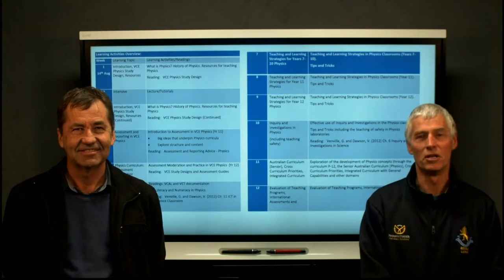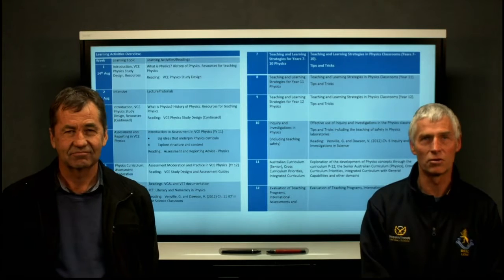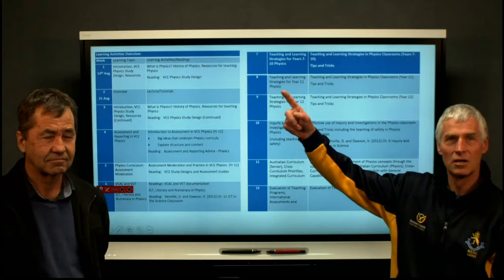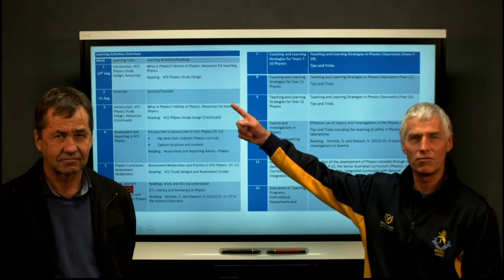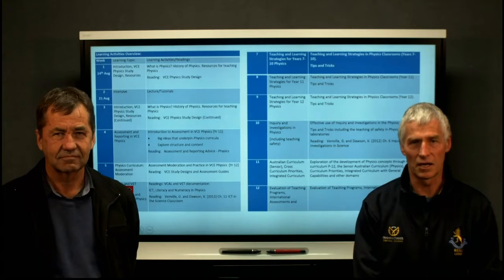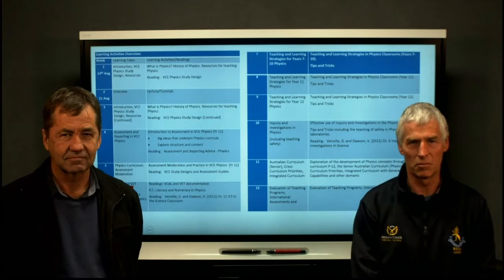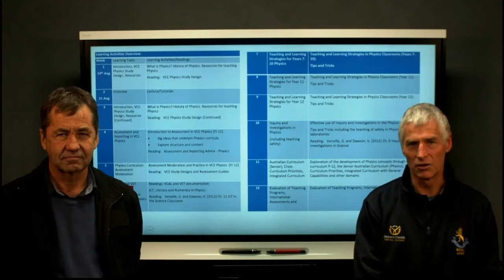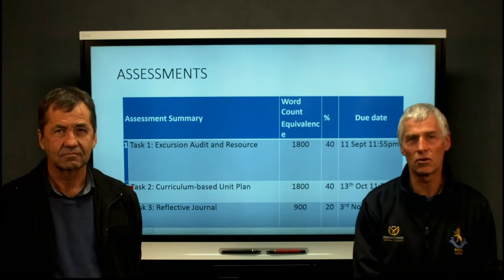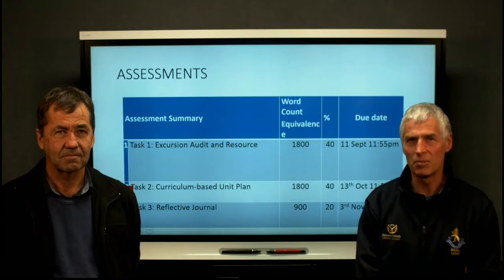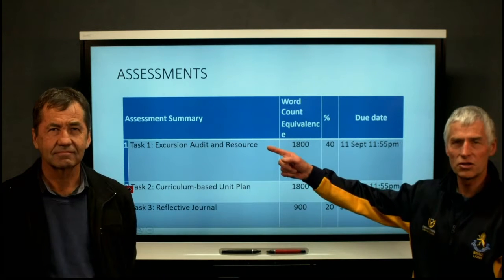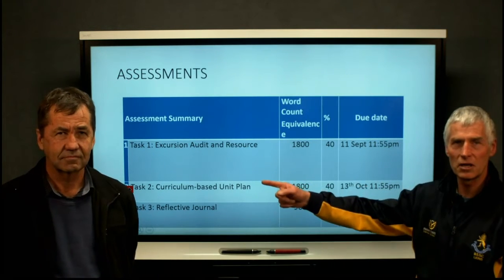You should be familiar with the course structure by now through the course booklet — it's just behind us here. We've got the 12 weeks. Week 2, of course, is the intensive at La Trobe Bundura, and the rest you should be fairly familiar with. As well as that, the three assessments for the course and when they appear — we've got the Excursion Audit and Resource.